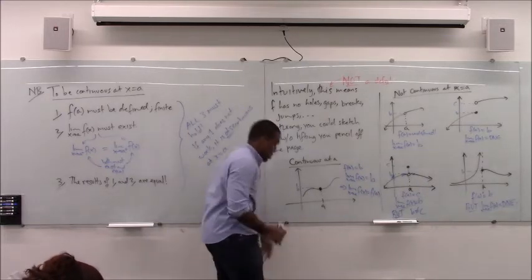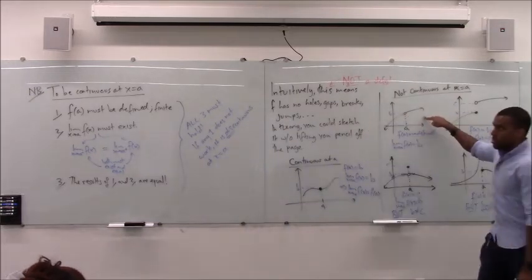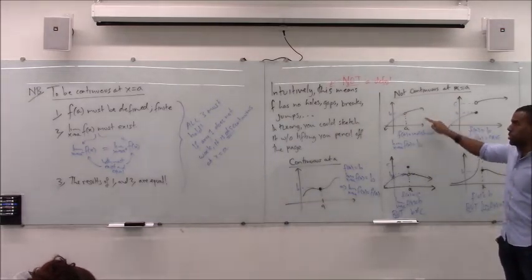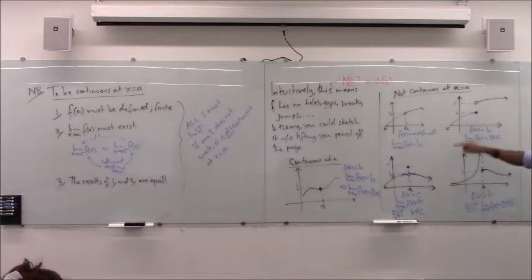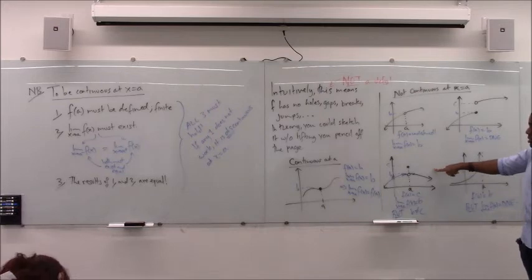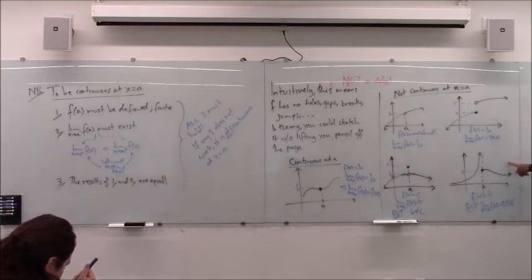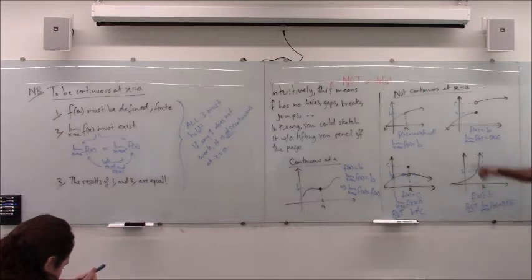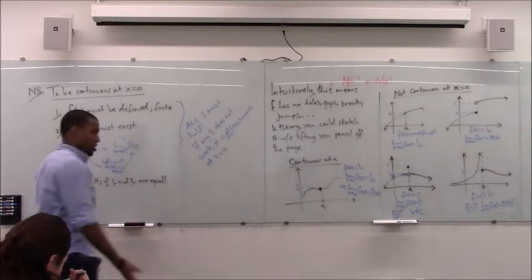In the first example, step one doesn't work — f isn't defined. In the second, step one works but step two doesn't, so it's automatically not continuous. In the third, steps one and two work, but step three doesn't. In the fourth, step one works but step two doesn't. So whenever something is discontinuous, one of those three things failed. Once all three hold, you're continuous.